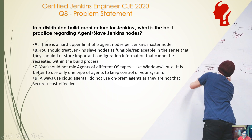Option B is the correct answer. You should treat Jenkins slave nodes as fungible or replaceable in the sense that they should not store any important configuration information that cannot be recreated within the build process.